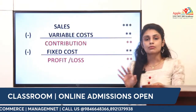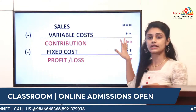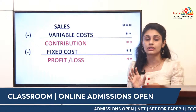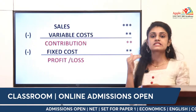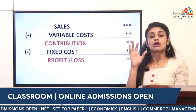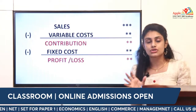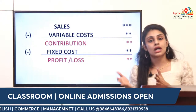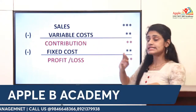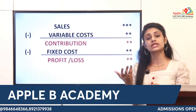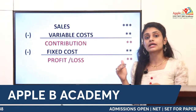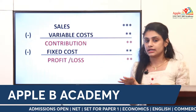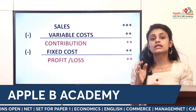If you learn this area, you need a basic idea of the format or equation. Sales minus variable cost gives you contribution. For example, if sales are 10 and variable cost is 2, then 10 minus 2 equals 8, which is your contribution. If fixed cost is 5, then 8 minus 5 equals 3.